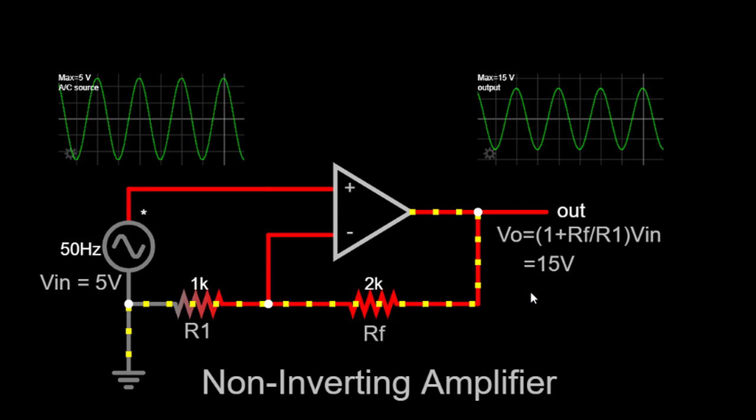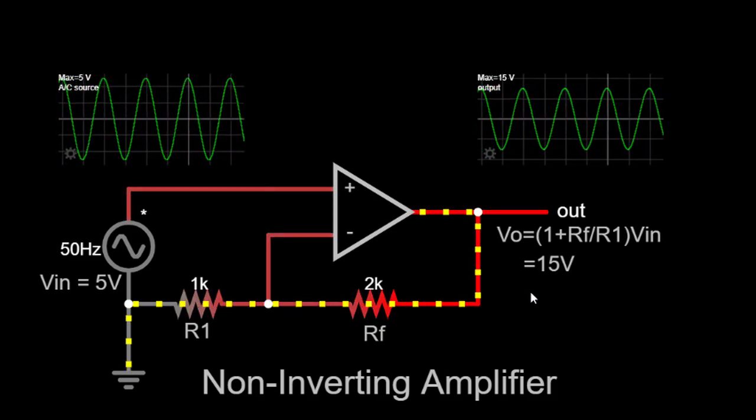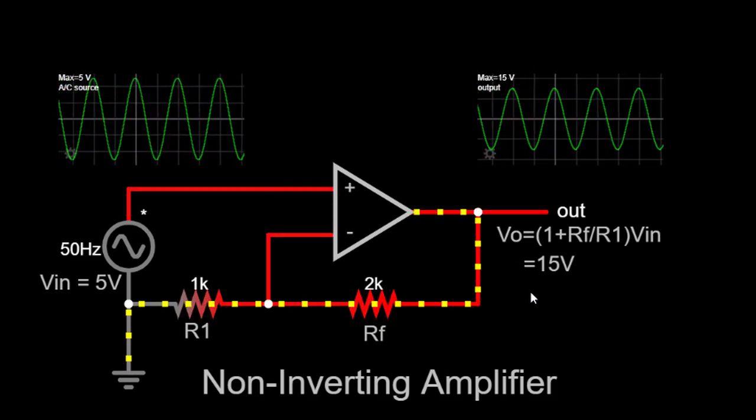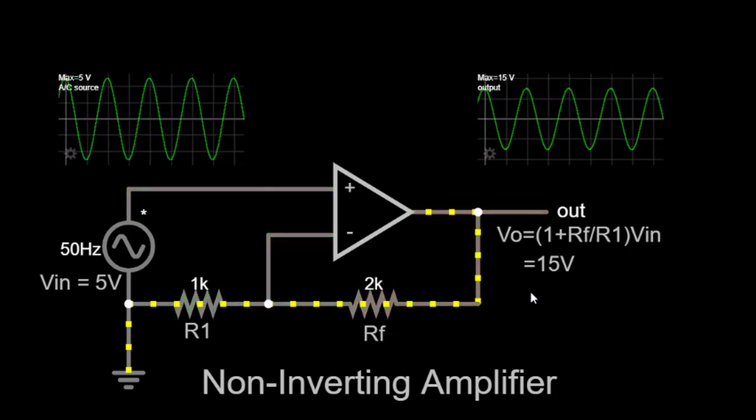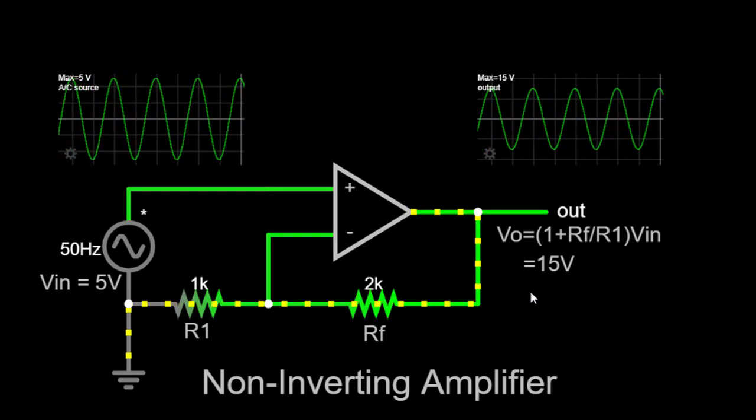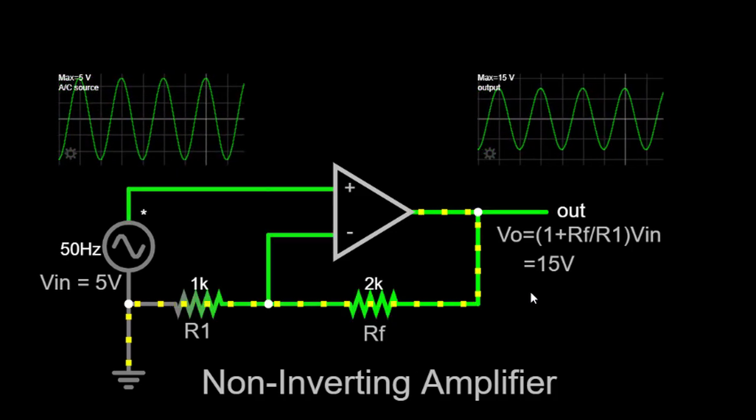That concludes our simulation and explanation of the non-inverting amplifier circuit. We have seen how this circuit amplifies signals without changing their polarity and how the gain can be adjusted by varying the resistor values.